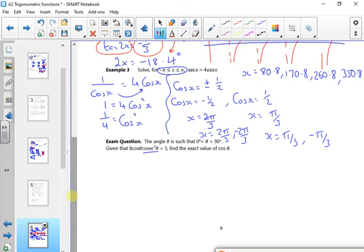So cosecant is 1 over sine. So that's going to be cosecant squared, which is 1 over sine squared. So I'm going to put sine squared down here. And I'm going to take the sine squared up.